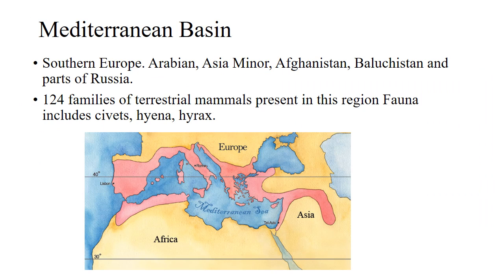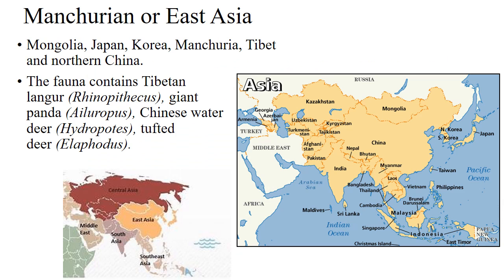The Mediterranean basin consists of Southern Europe, Arabia, and Asia Minor, including parts of Russia. 124 families of terrestrial mammals are present, and fauna includes civets, hyena, and hyrax. The Manchurian or East Asian region consists of Mongolia, Japan, Korea, Manchuria, Tibet, and northern China. Important fauna includes langur, panda, Chinese water deer, and tufted deer.